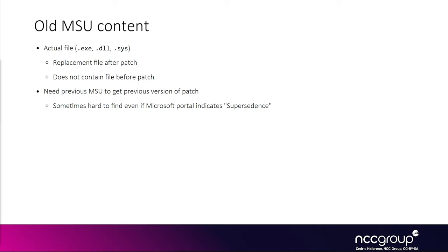Microsoft indicates the supersedence of a given KB, so a given KB will typically say it supersedes another KB. You can look at the previous KB and extract it to try to find a previous version of the file before the patch. Sometimes you might not find it and would have to play the supersedence game for a few hops before finding the right file.